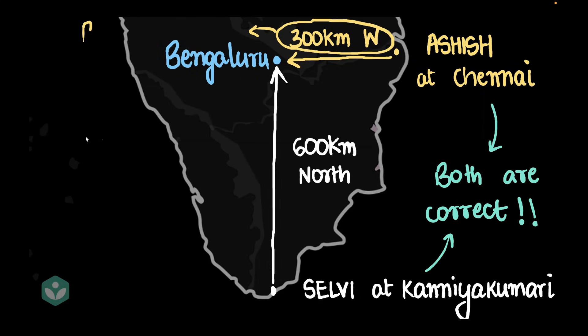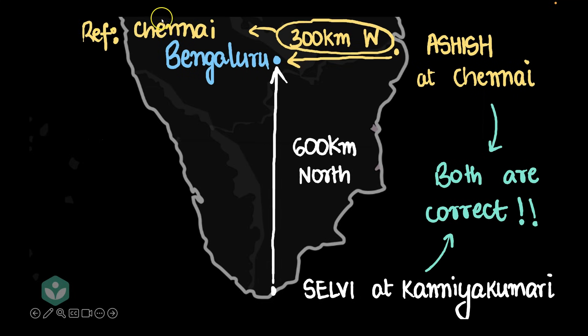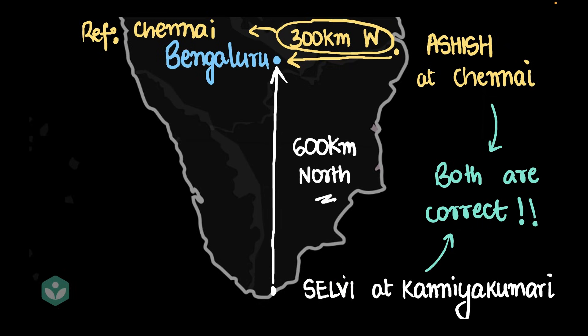300 kilometers west makes sense if we use Chennai as the reference, or if we are speaking from the perspective of Chennai. And 600 kilometers north is perfectly correct if we are using Kanyakumari as our reference. If you're a little confused, I'd encourage you to pause for a moment and think about this scenario.